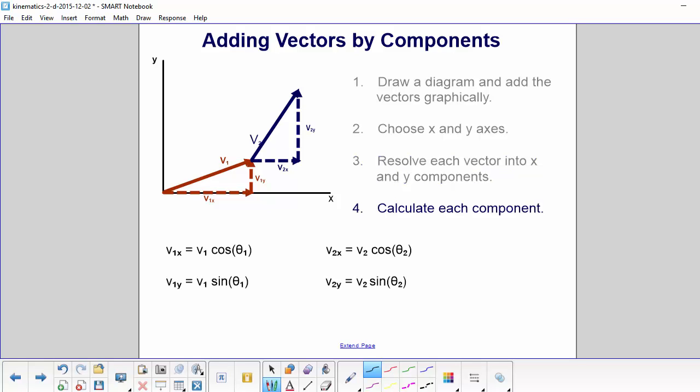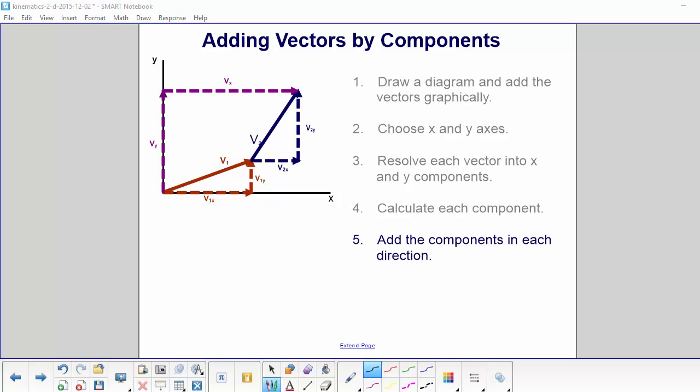Step 4, calculate each component using sine and cosine. Step 5, add the components in each direction. Step 6, find the length and direction of the resultant vector using Pythagorean theorem and inverse tangent.